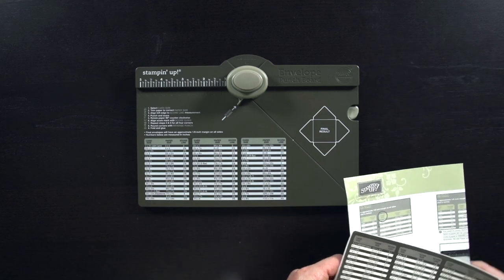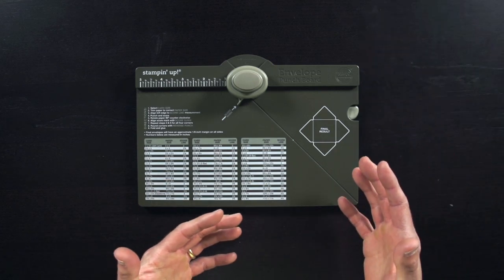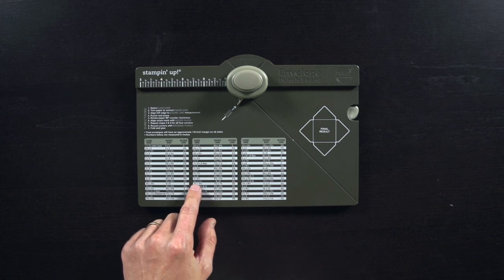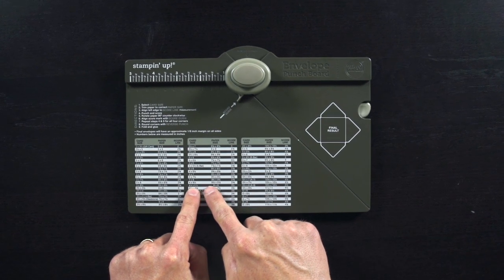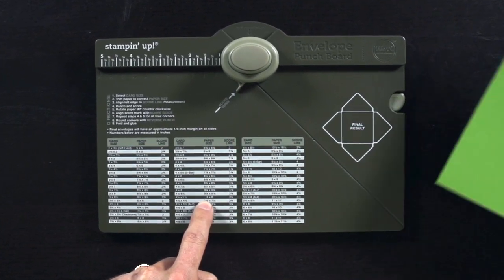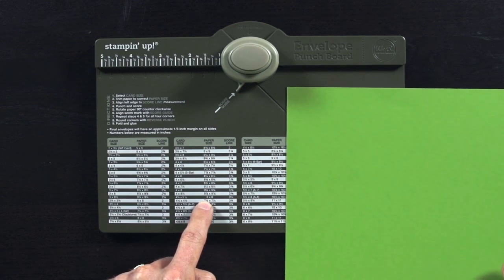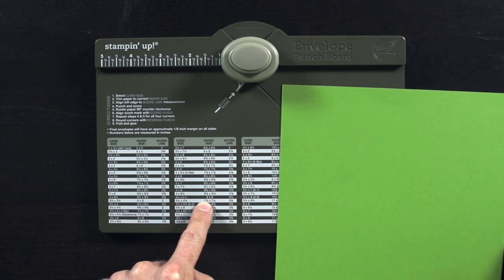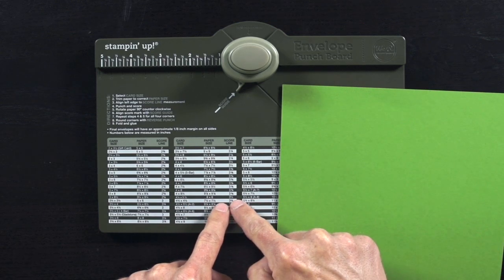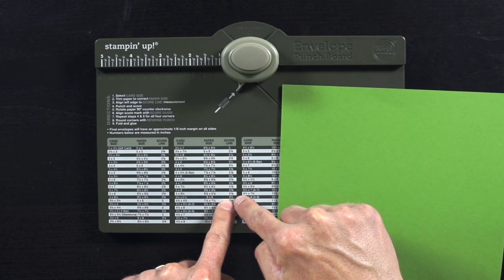And from there, it's really simple. You figure out what size card you have. So let's say that my card size is four and a quarter by five and a half. What I need to make my envelope, it says the paper size, I need an eight by eight square of paper. I can use cardstock or my DSP. And the next piece of measurement I need is the score line, which is at three and a half inches.